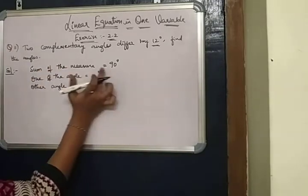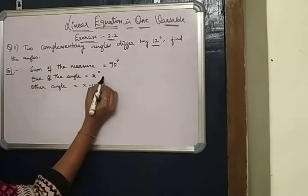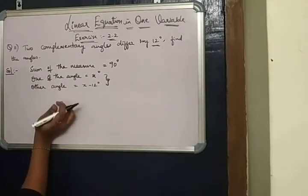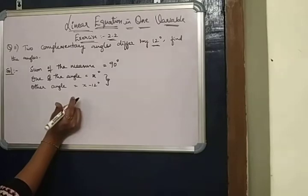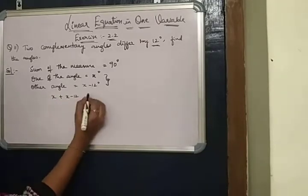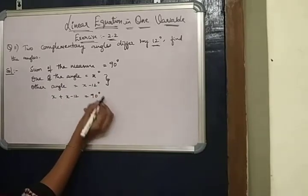According to the formula, the sum of the measure is equal to 90 degrees. Sum of the measure means we have to add both the angles. Therefore, x plus x minus 12 is equal to 90 degrees.